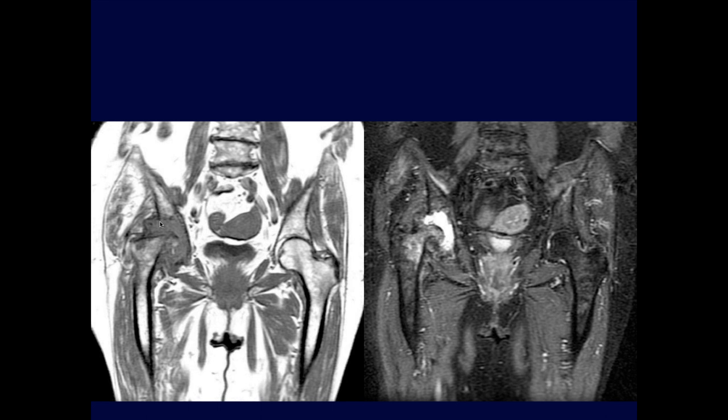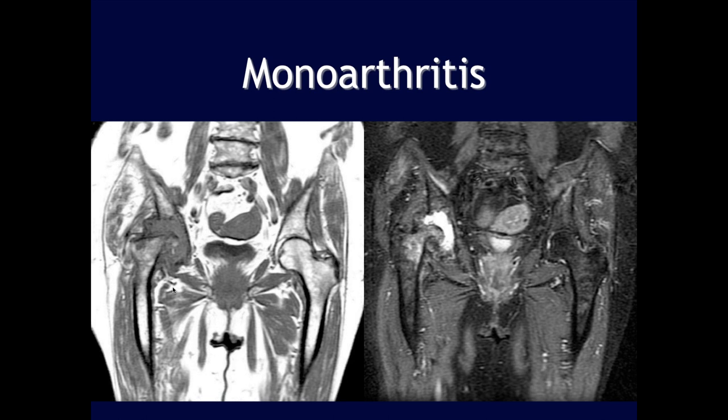On coronal imaging of the right hip, the femoral head looks quite deformed with a large effusion and remodeling. There's atrophy within the musculature bilaterally. This looks like focal degenerative change — mono-arthritis. This was actually sequelae of chronic joint infection that was not properly treated.